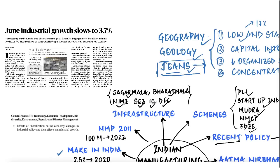June industrial growth slows to 3.7%. Industrial production growth slowed to a 3-month low of 3.7% in June. The Index of Industrial Production is the indicator which gives an idea about how the manufacturing and industrial sector is performing. One of the main reasons this has happened is because our manufacturing sector is not performing well. We always grudge about low levels of employment and contribution from the manufacturing industry.